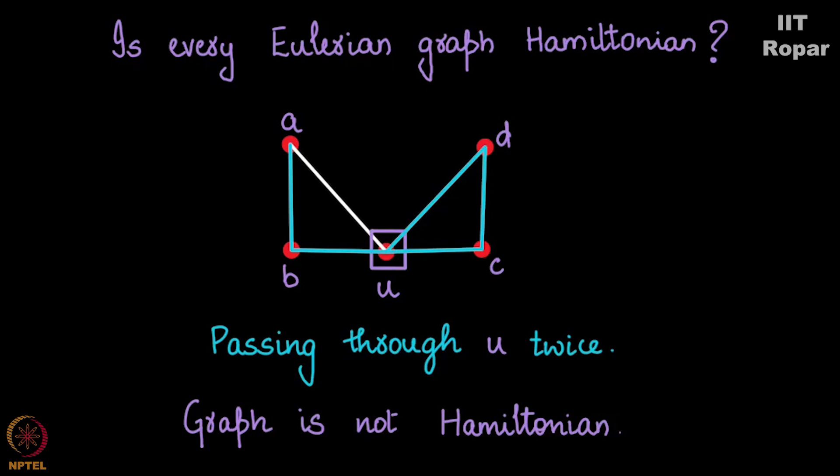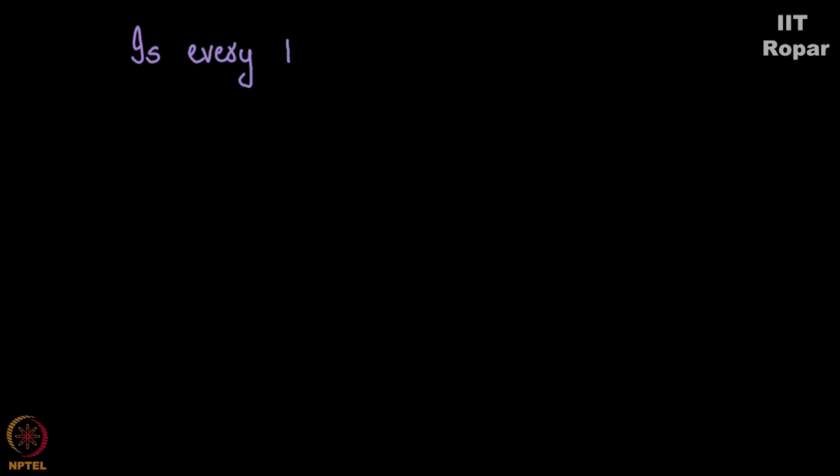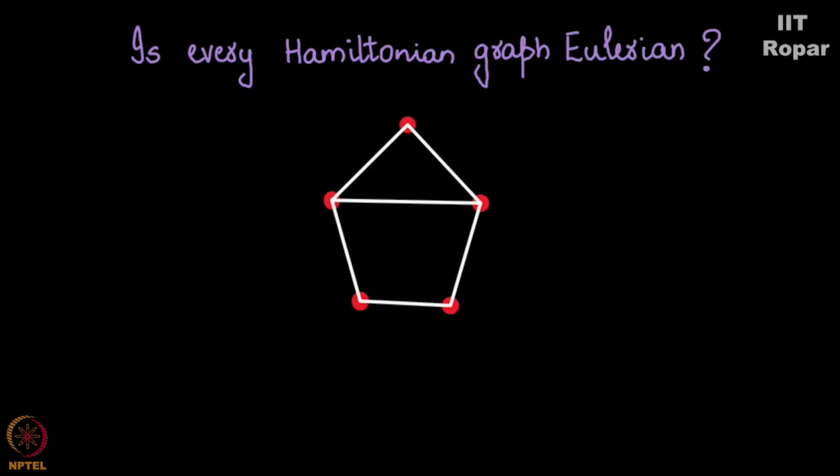The obvious next question would be: is every Hamiltonian graph Eulerian? Let me take this graph. It is a C5 with an edge in between. Do you see that the degree of these two vertices is odd?